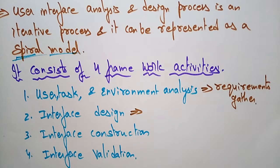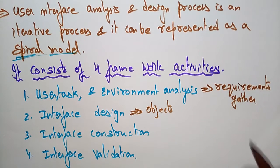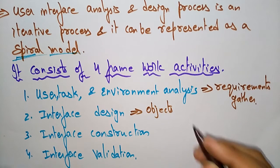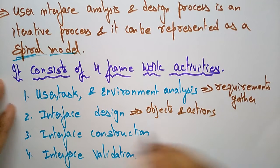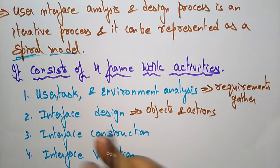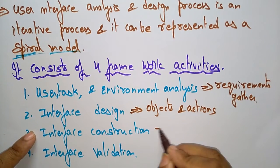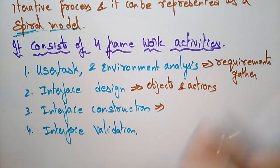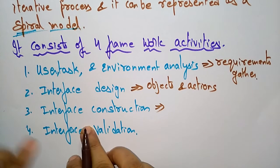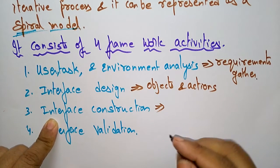In the interface design activity, we find out the objects we are using in that process and the actions that will take place. These are represented in the form of a design. That activity is the interface design — designing whatever process is to be implemented, including the objects and actions involved.